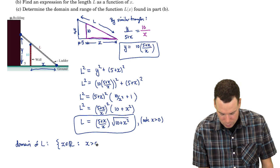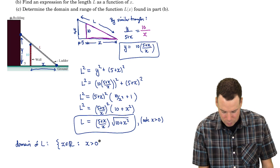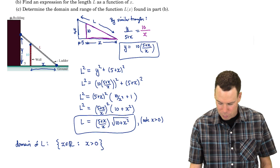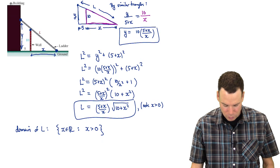But anything bigger than zero, any distance bigger than zero is fine. So there's my domain. X just has to be bigger than zero.